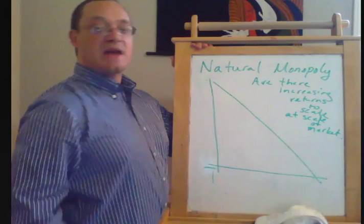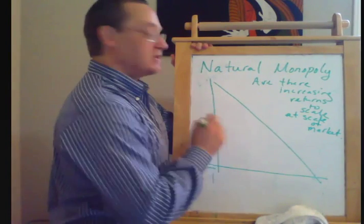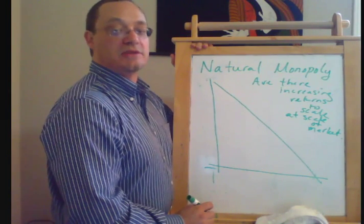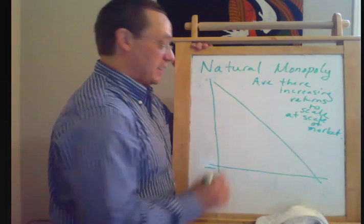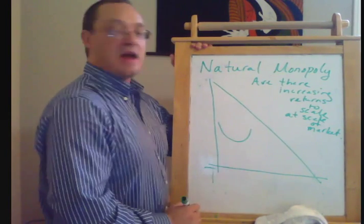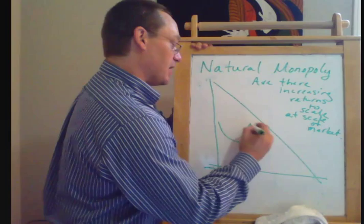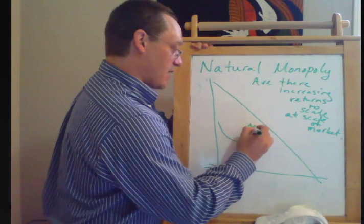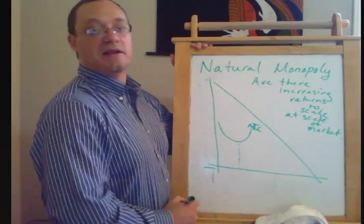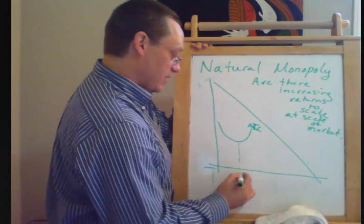Or more technically, is the average cost curve downward sloping where the demand curve is? So if we have an average cost curve like this, average total cost, you can see that the most efficient scale of production is at this quantity right here.